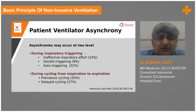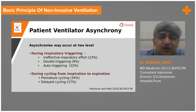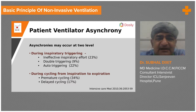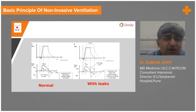Asynchrony means there is no proper synchronization between the patient and the ventilator. Asynchrony can occur at two levels: one is during the inspiratory trigger phase — due to auto-triggering, double triggering, or ineffective inspiratory effort when the patient is not making adequate effort. The second kind of asynchrony occurs during cycling from inspiration to expiration, which may occur because of delayed cycling or premature cycling.